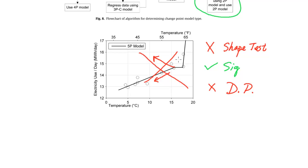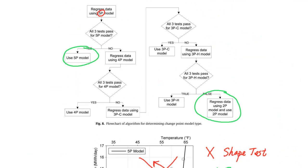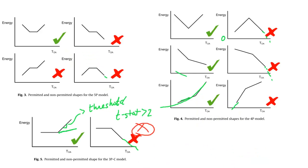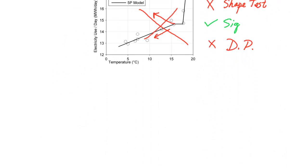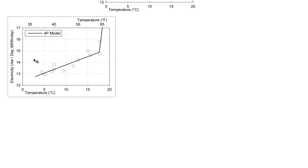So what do we do? If we follow the algorithm, we go ahead and we now try regressing the data using a four-parameter model. So here's the four-parameter model. So as you can see, let's go through our tests again.